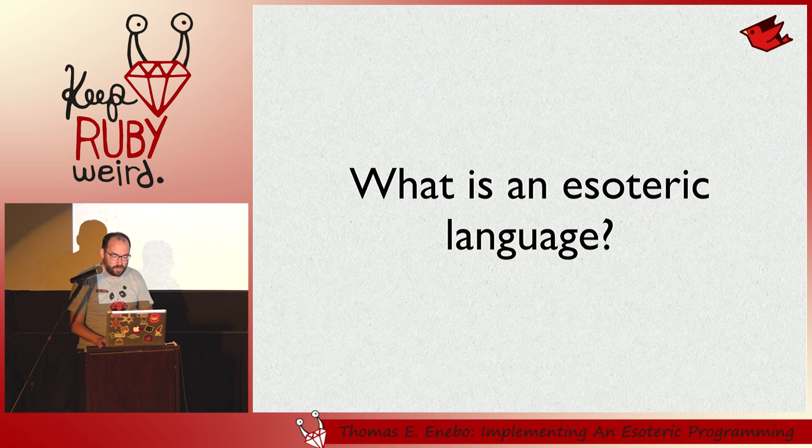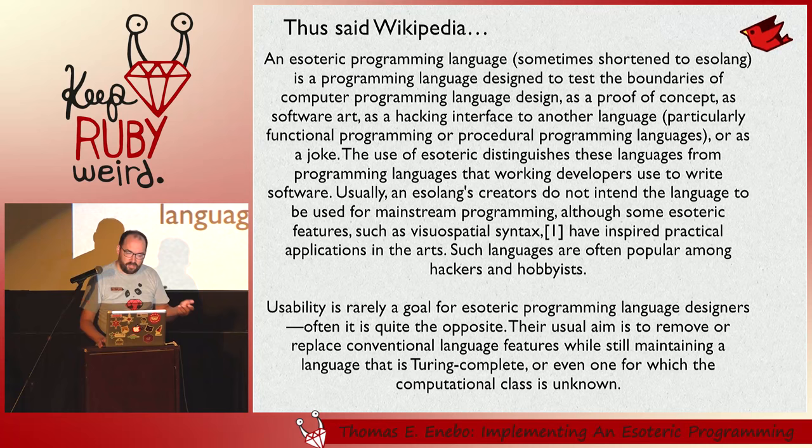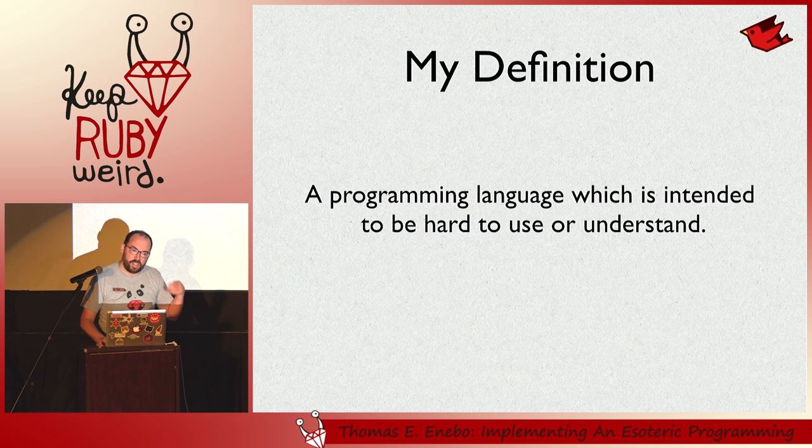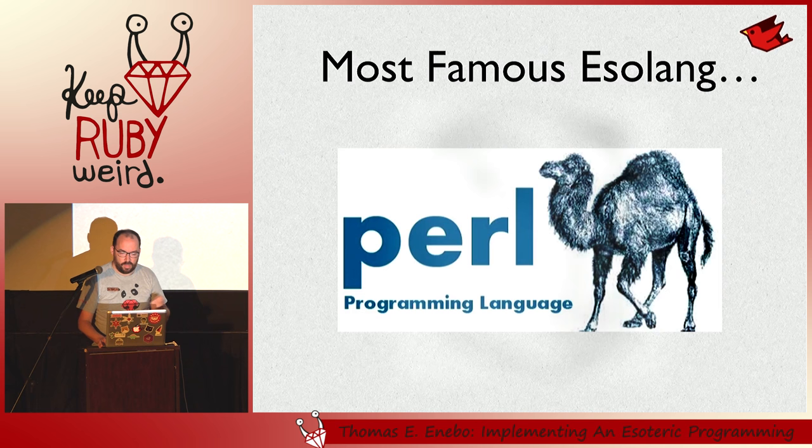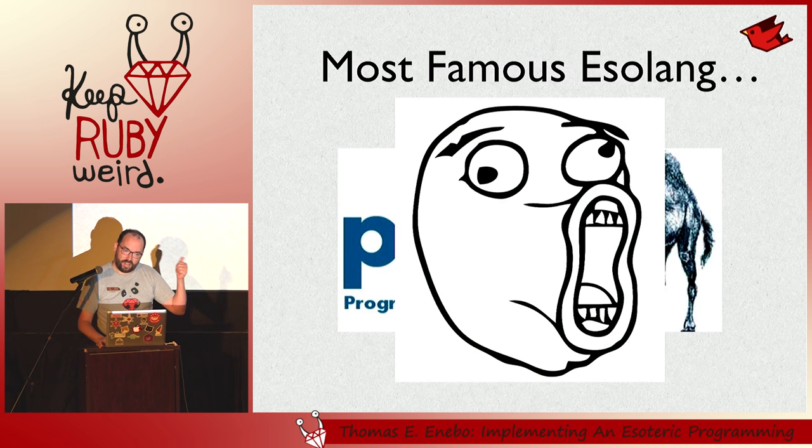So what's an esoteric language? If we look at Wikipedia, it has a lot to say, and it's very, very squishy. I'll just boil it down to one sentence: it's a language which is intended to be hard to understand or read. The most famous one is Perl.